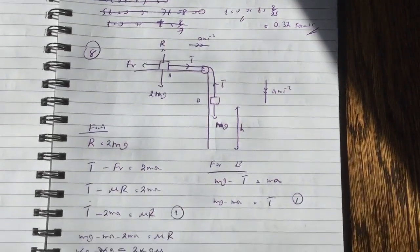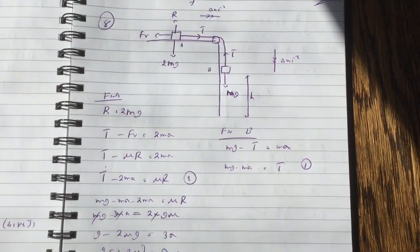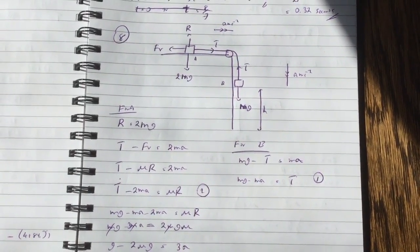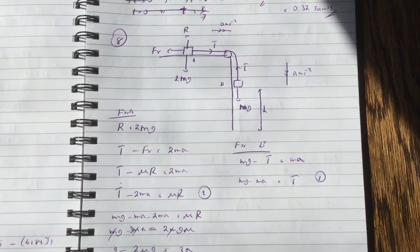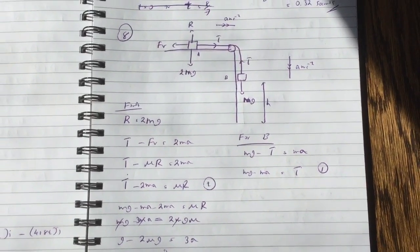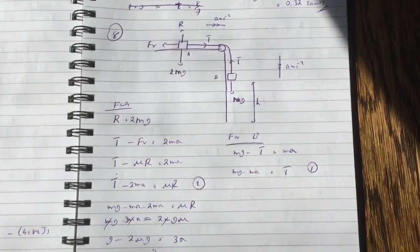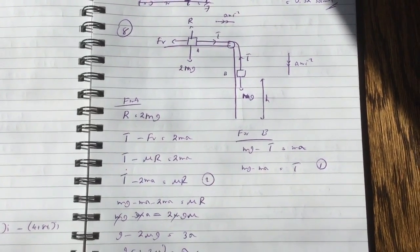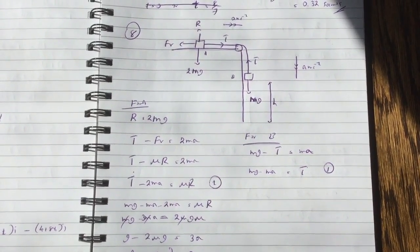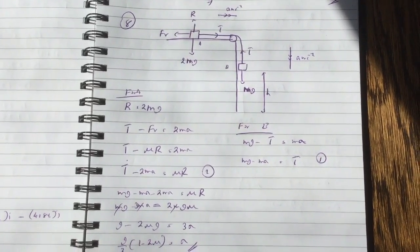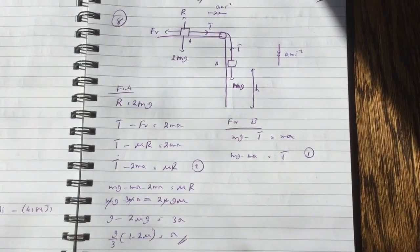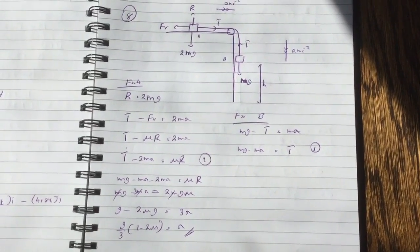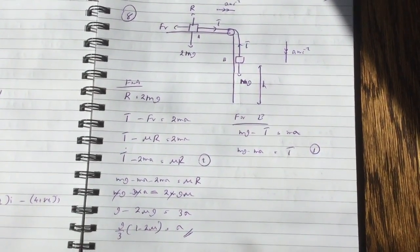So that leads us to question 8 which is a system. You can see I've drawn all the forces. So it's accelerating to the right and to the downward vertical. So for particle A which is the particle on the surface, R equals 2mg vertically, and horizontally T minus friction equals 2ma because it's accelerating that way. And that is T minus mu R equals 2ma. So T minus 2ma equals mu R.